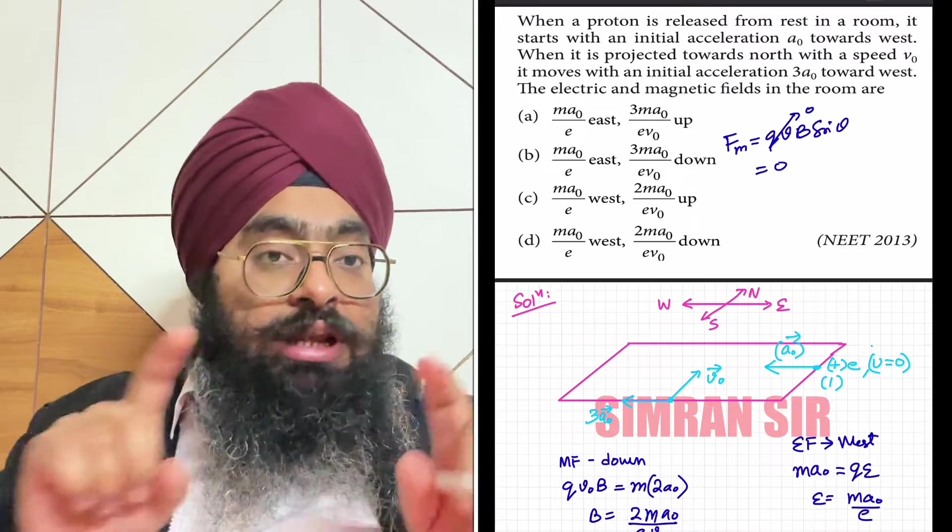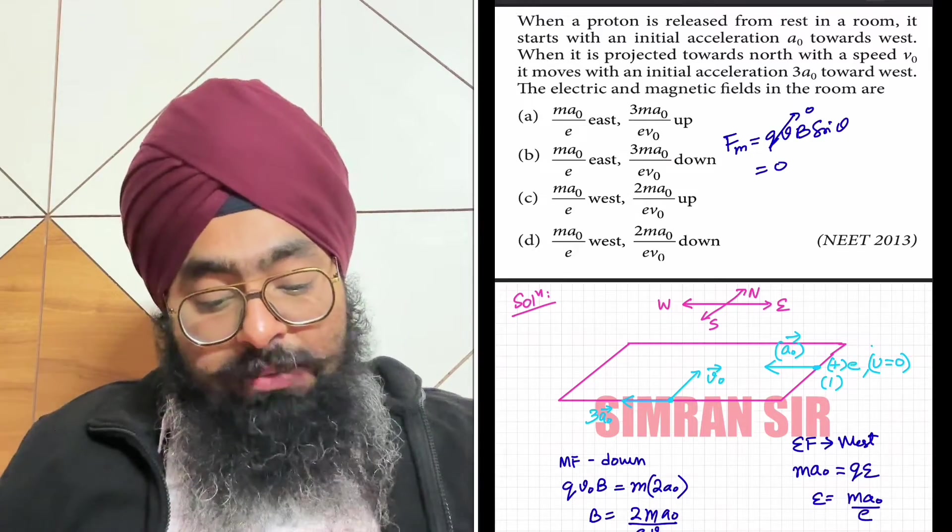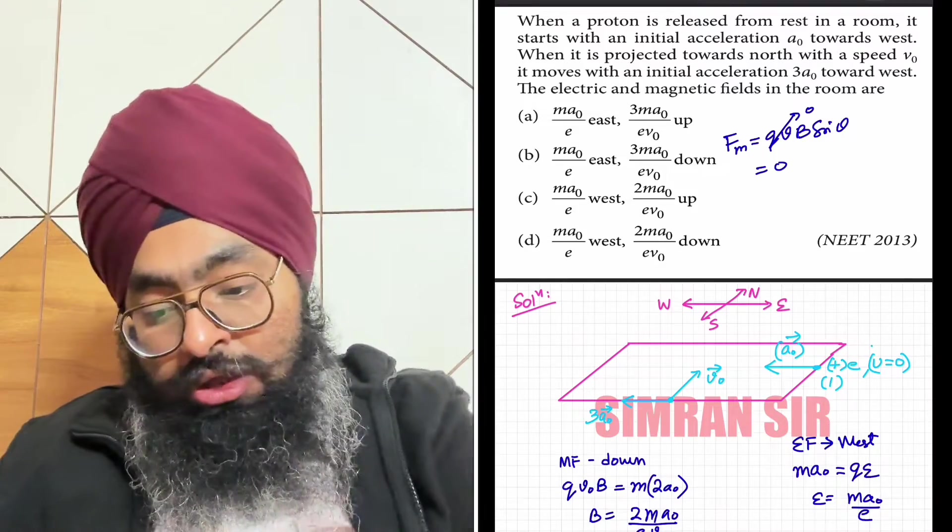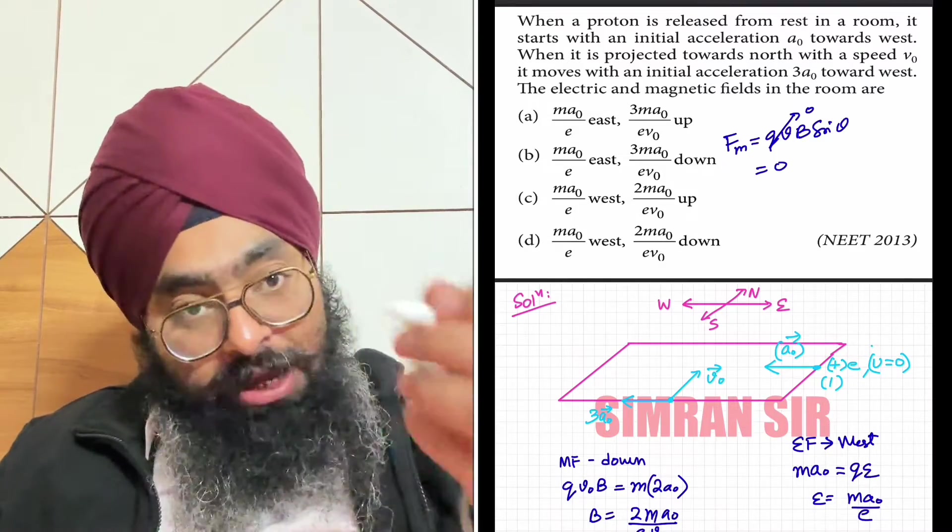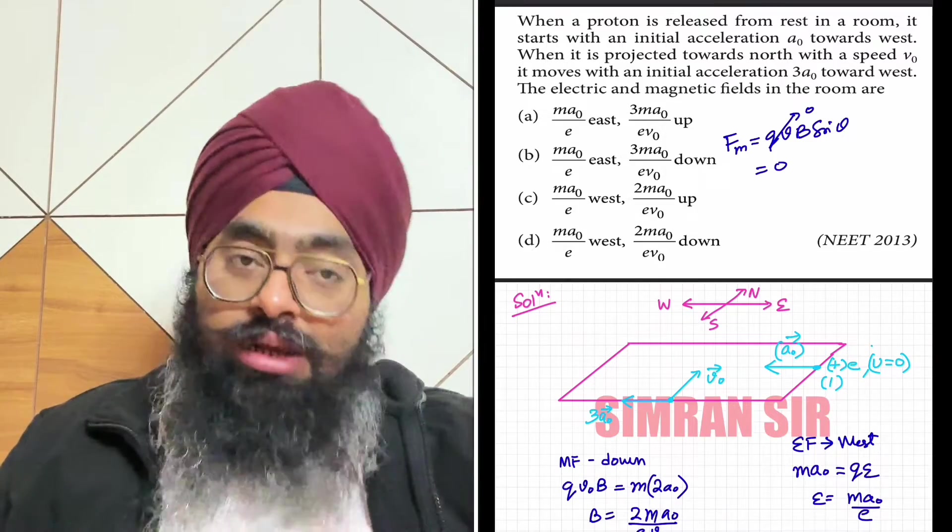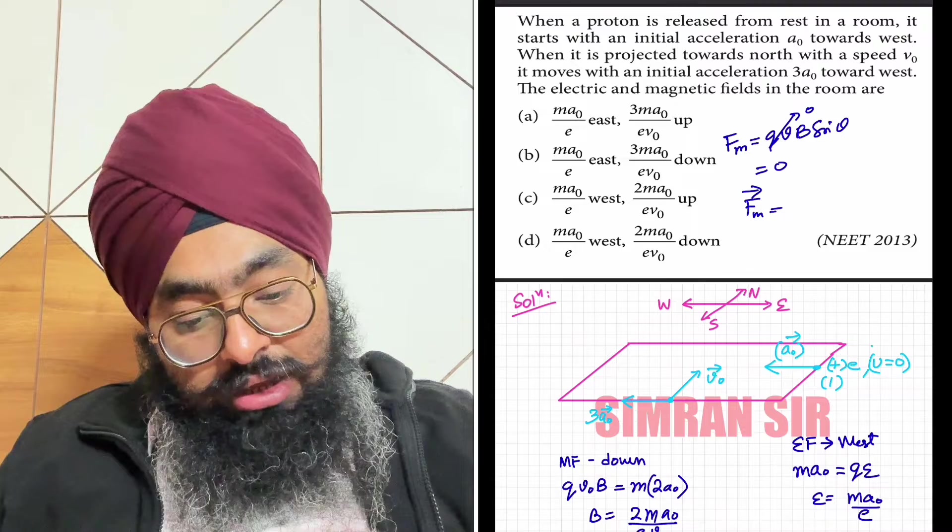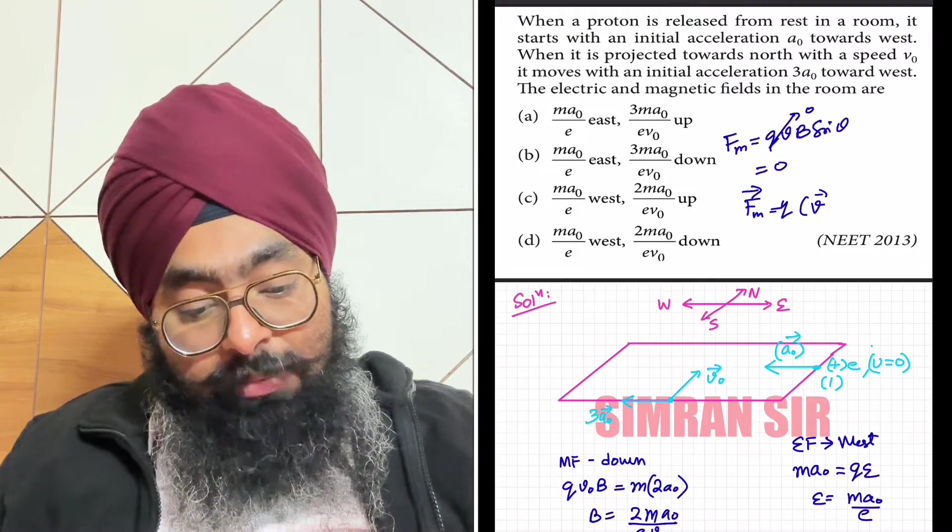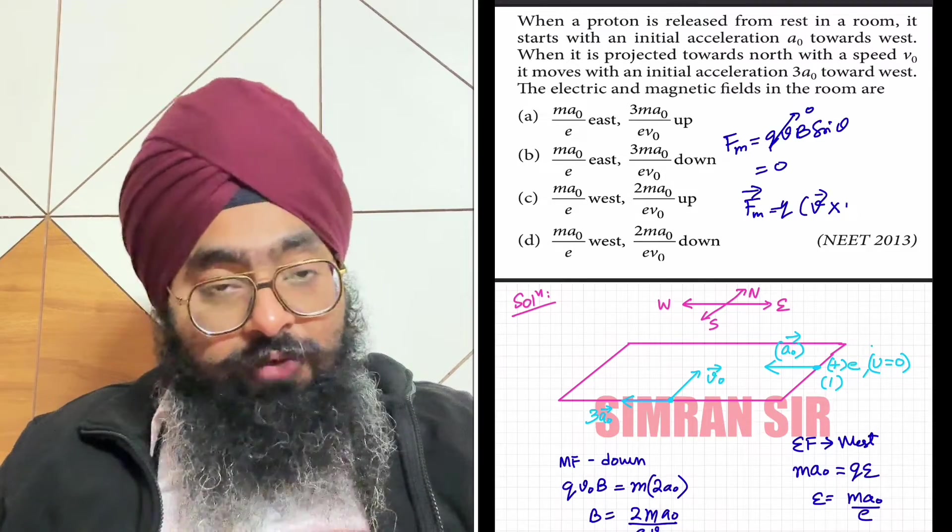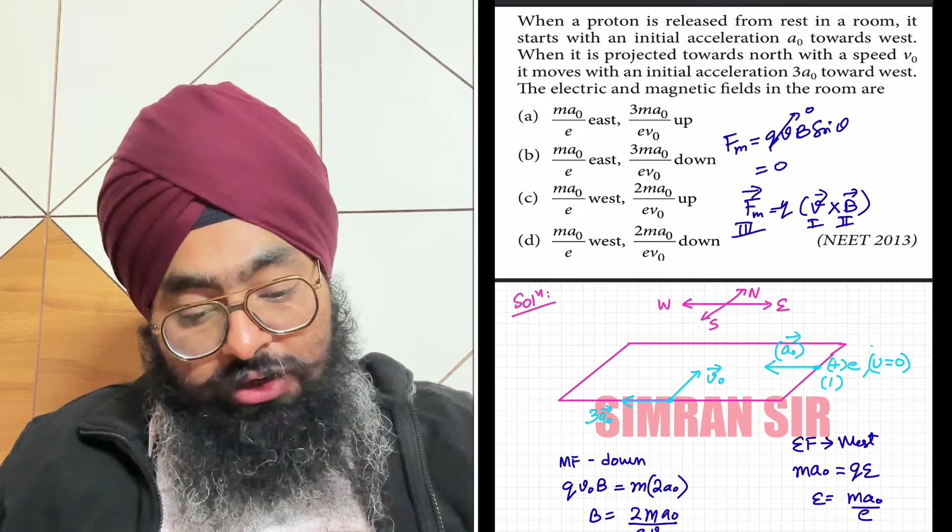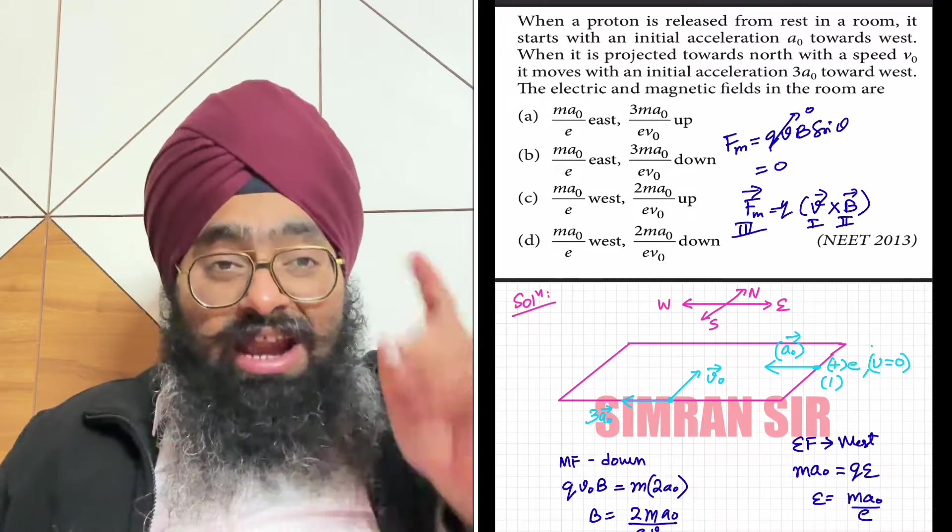First we find the direction of magnetic force. The magnitude we'll find later. Magnetic force is given by qv cross B. Right-hand rule: fingers point in first vector direction, palm points in second vector direction, thumb points in third vector direction.